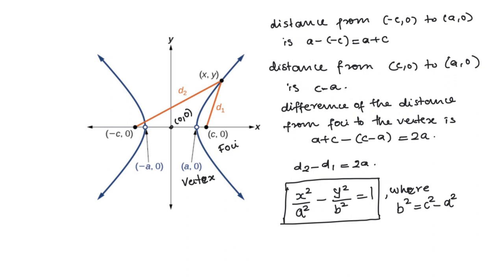The standard equation for the hyperbola is x² divided by a² minus y² divided by b² equals 1. It looks similar to the formula for the ellipse — the only difference is there is a minus sign here, whereas the ellipse had a plus sign.